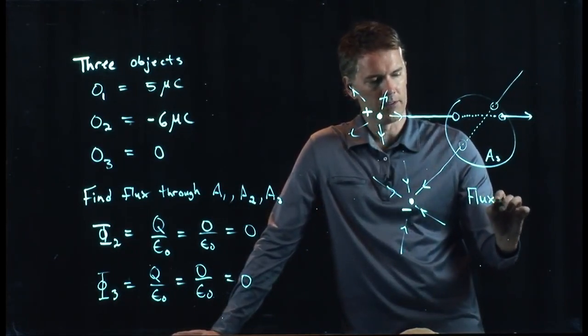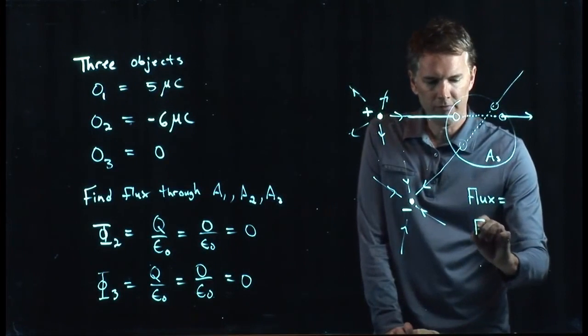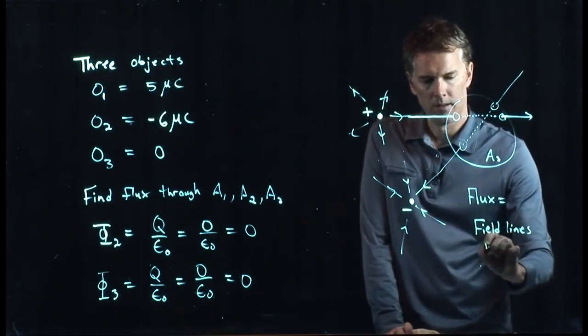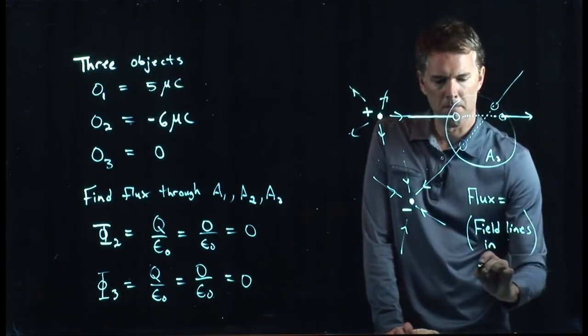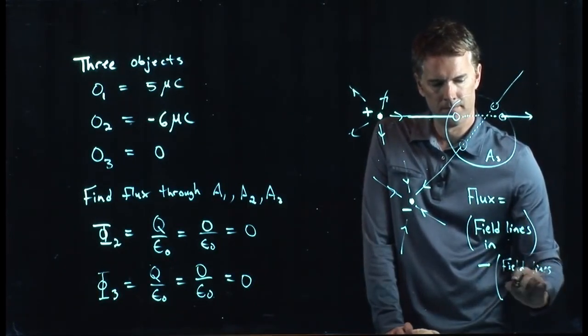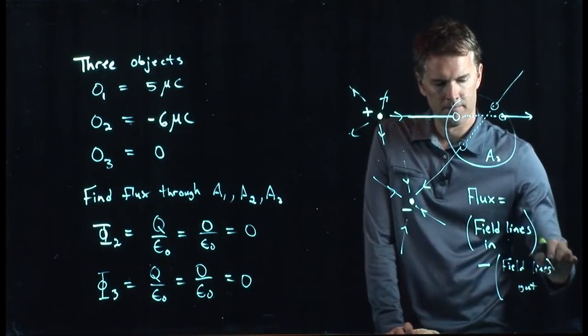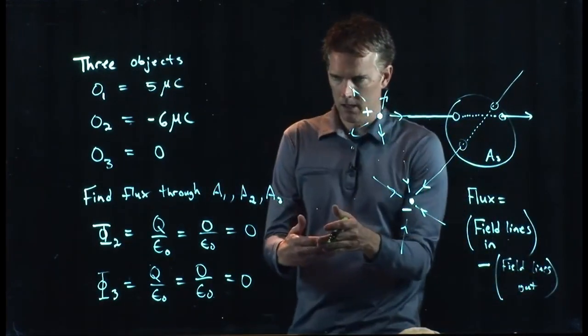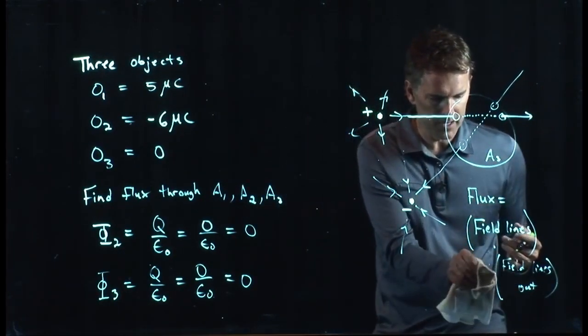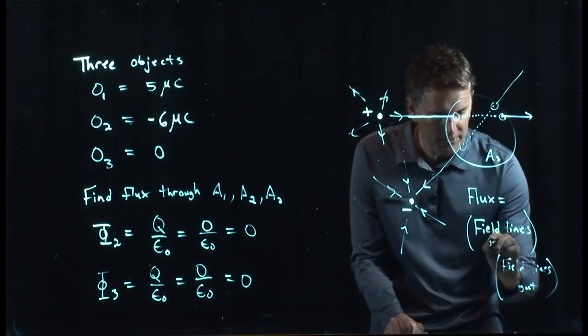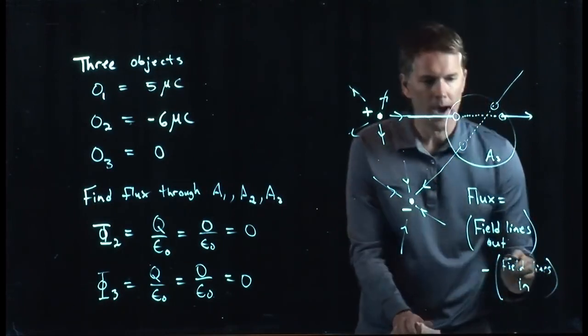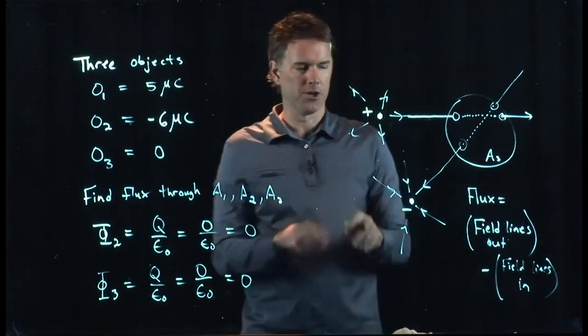But what is flux? Flux is field lines in minus field lines out. How many field lines are going in minus how many field lines are going out? Actually, it's the other way, I think, is the way we typically define it. So we'll change this to field lines out minus field lines in. And that way, it's a positive number if there's a positive charge in there.